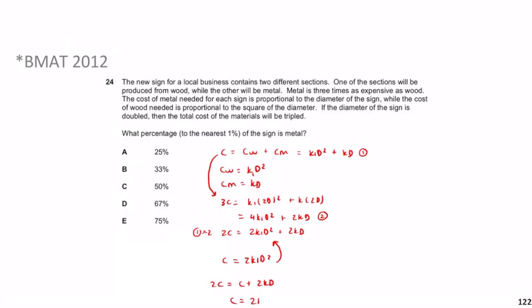Since both expressions equal C, I can equate them: 2k₁d² equals 2kd. The twos cancel, giving k₁d² equals kd. But k₁d² is the cost of wood, and kd is the cost of metal. So the cost of wood equals the cost of metal.